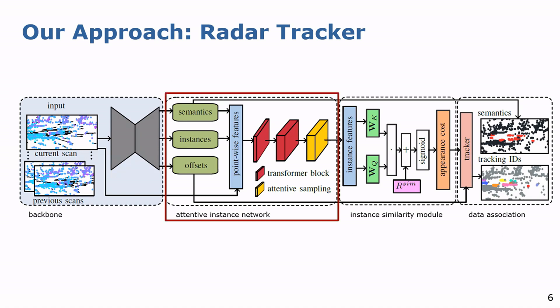The attentive instance network utilizes transformer blocks and an attentive sampling strategy to extract for each instance a feature vector. We encode these feature vectors as queries and keys, as you might know from the traditional point cloud attention mechanism. We add the positional encoding R and pass it through a sigmoid function to calculate the appearance cost between the individual instances.